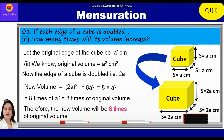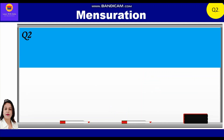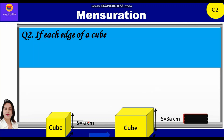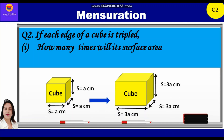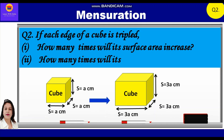Now let's start the second question: if each edge of a cube is tripled, how many times will its surface area increase? How many times will its volume increase? Let's start with the solution.